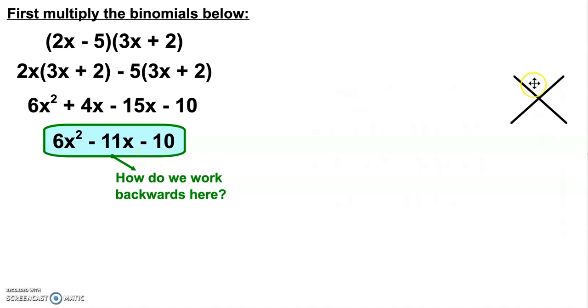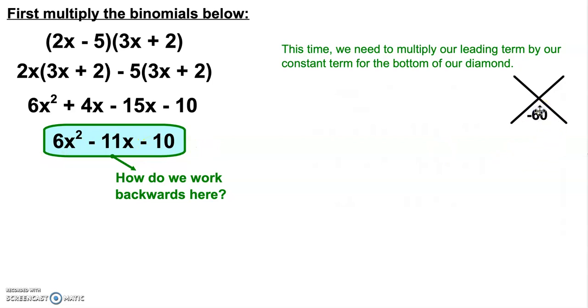Well, remember we used our diamond to be able to figure out what we could multiply to and then add to. This time, because we have another number other than 1 in front of that x squared term, we need to be able to use it. So this time, we're going to multiply our leading term by our constant term for the bottom of our diamond. So the 6 times negative 10 becomes a negative 60.